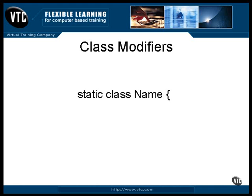A nested class — a class inside a class — can be declared as static. It means that the inner class can be instantiated by itself without the outer class being instantiated. That is, it becomes a regular class definition, except you can only refer to the class by name by using a dot reference with the name of the outer class.